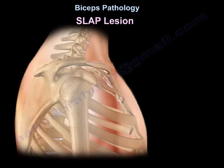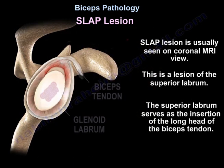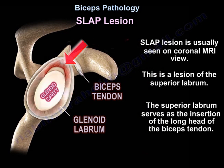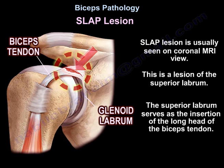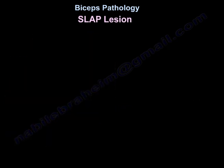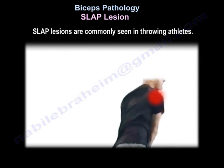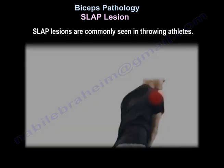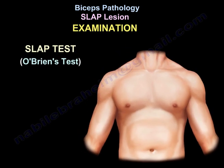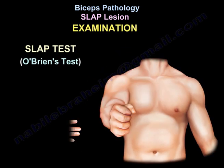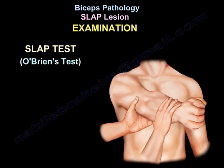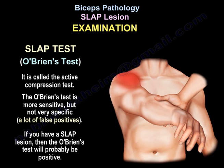SLAP lesion, usually seen in coronal MRI view. This is a lesion of the superior labrum, which serves as the insertion of the long head of the biceps. SLAP lesions are usually common in throwing athletes. The clinical diagnosis can be made by performing the O'Brien test, also called the active compression test. The O'Brien test is more sensitive but not very specific.